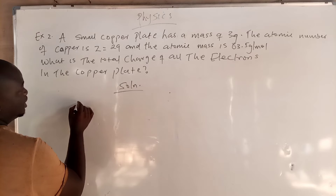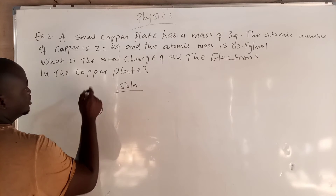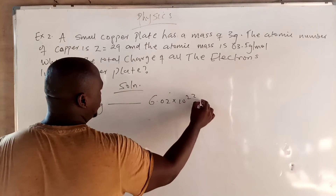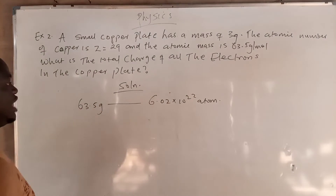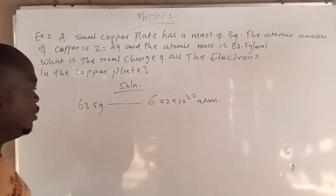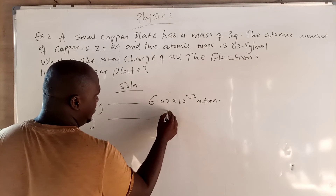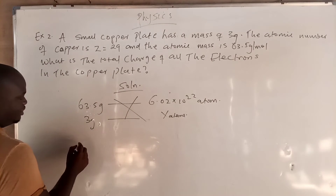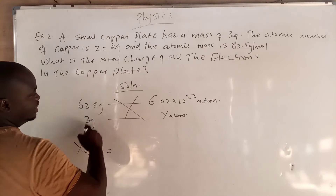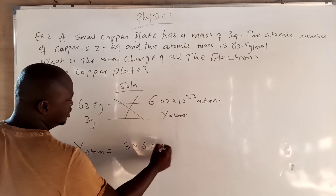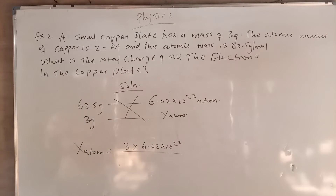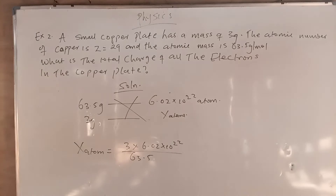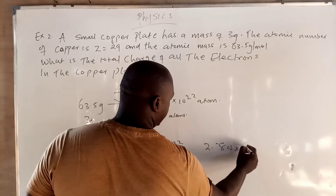Applying stoichiometry: in 63.5 grams of copper, there are 6.02 times 10 raised to the power of 23 atoms. We have 3 grams, and we want to know the number of atoms in 3 grams of copper. By cross-multiplication, x atoms equals 3 times 6.02 times 10 raised to the power of 23, divided by 63.5. Punching your calculator, this gives approximately 2.84 times 10 raised to the power of 22 atoms.